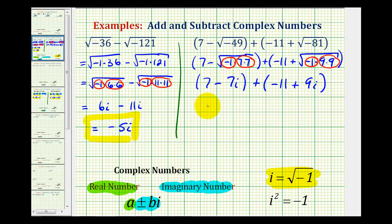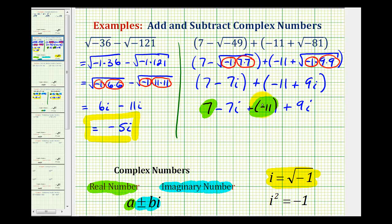Let's go ahead and clear the parentheses. We have 7 minus 7i plus negative 11 plus positive 9i. So we have 7 plus negative 11, that's equal to negative 4. And now we'll add the imaginary numbers: negative 7i plus 9i is positive 2i, so we have negative 4 plus 2i.